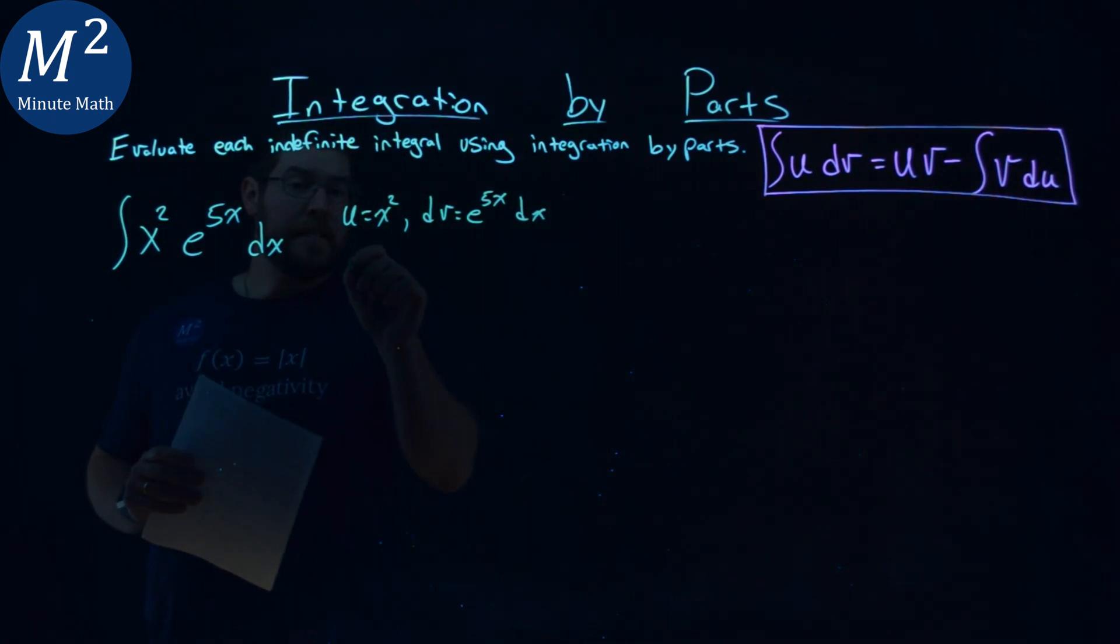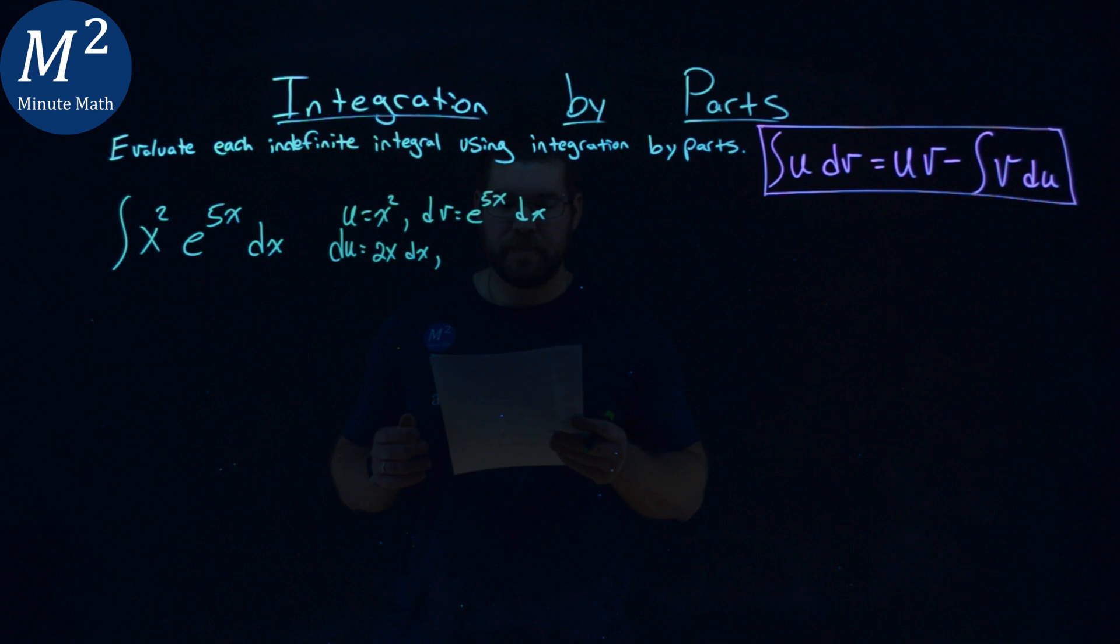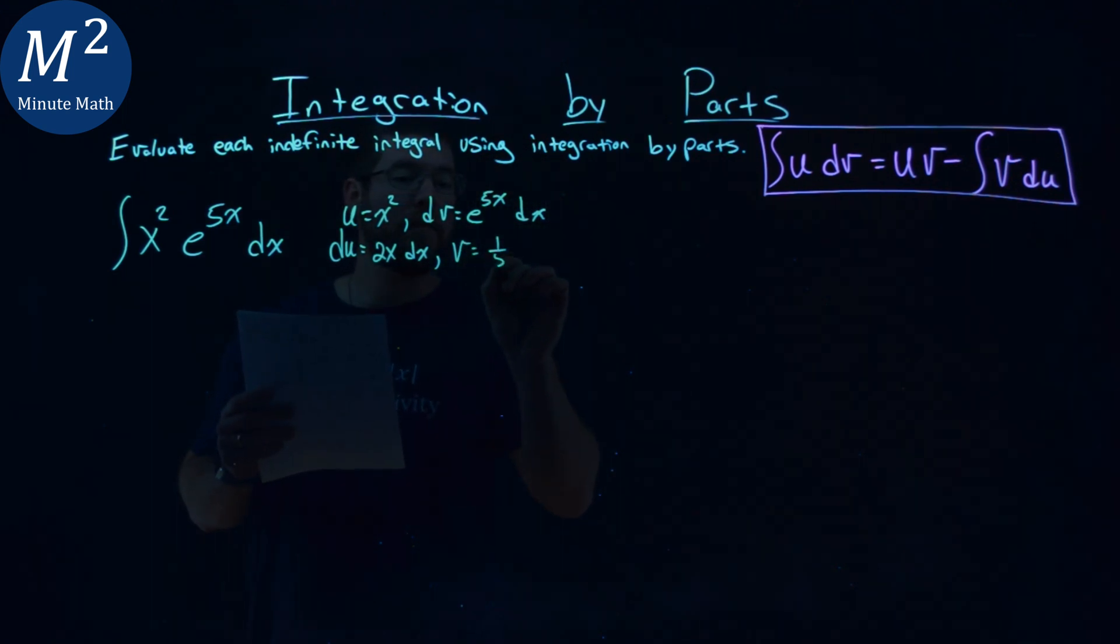and my dv value to be e to the 5x dx. Let's find du: the derivative of x squared is 2x dx. And my integral of dv is v, which is one-fifth e to the 5x power.